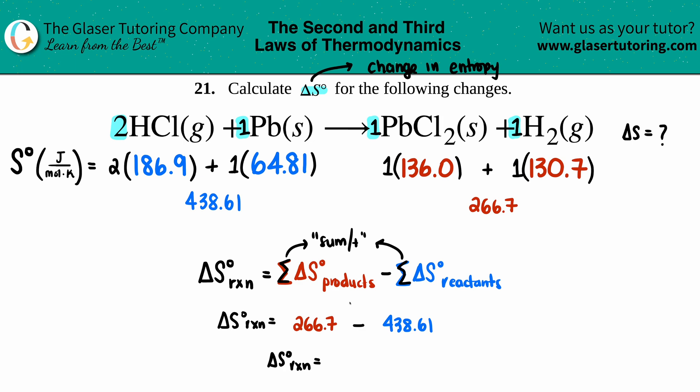266.7 minus 438.61 gives me negative 171.9. If we take into consideration that we should take one sig fig after the decimal, it's negative 171.9, and the units are joules per mole times kelvin.